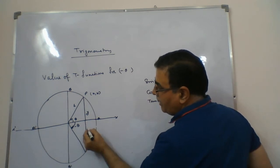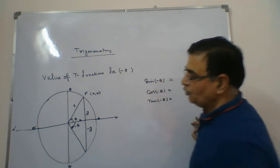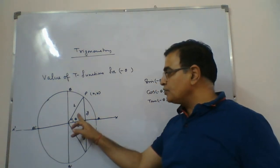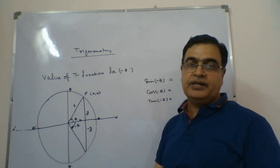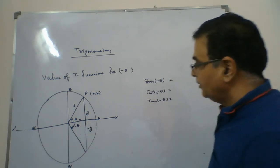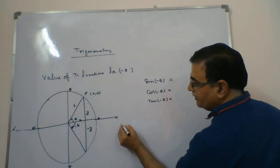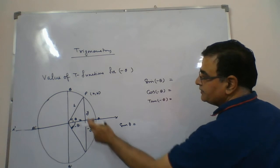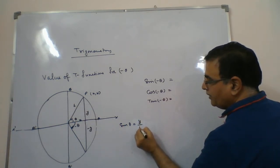When we rotate the ray downward, the length in the y-direction will become minus y; x will remain the same. Now when you think about sine theta, we take this triangle and find sine theta. Sine theta is perpendicular by hypotenuse, so it comes out to be y by 1.